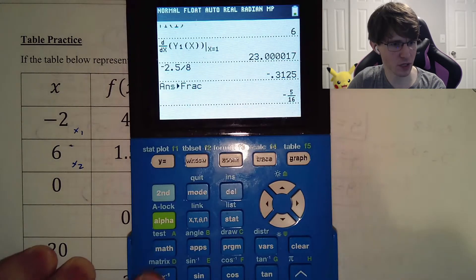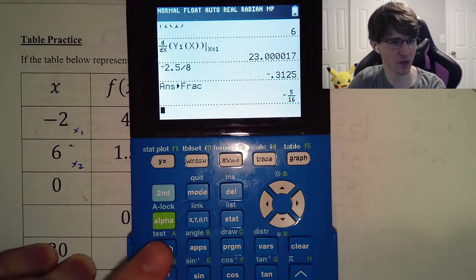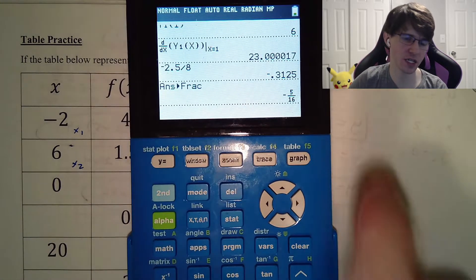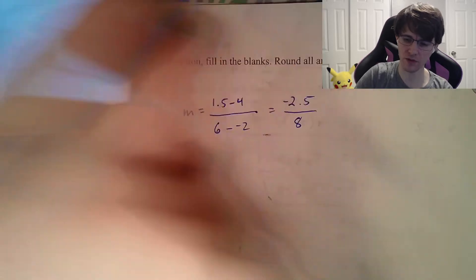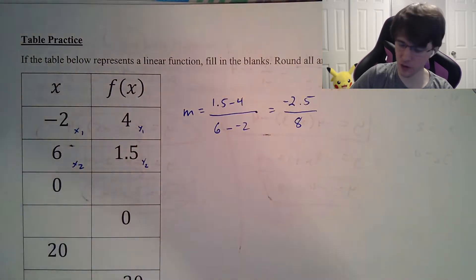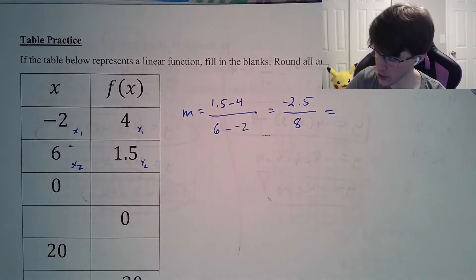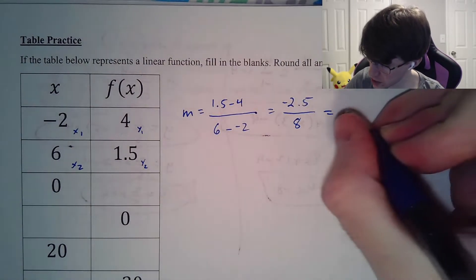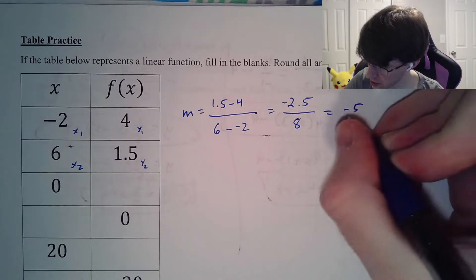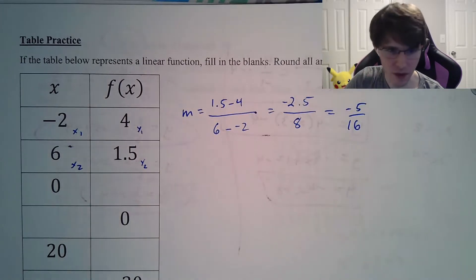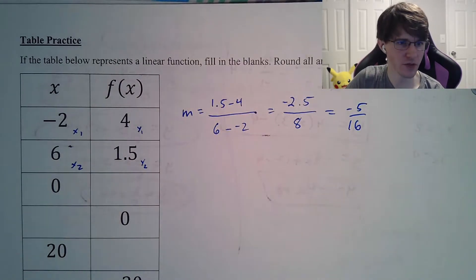You can leave it as a decimal or write it as a fraction. Multiplying by 2 over 2 gives you 5 over 16. To do this in the calculator: type negative 2.5 divided by 8, then hit Math, Enter, Enter, and you'll get negative 5 over 16.